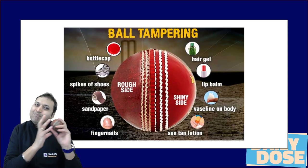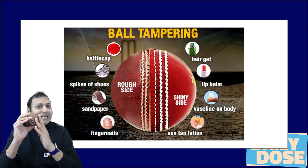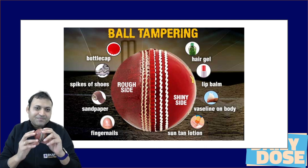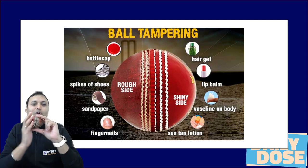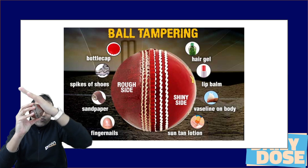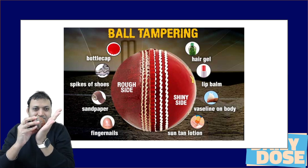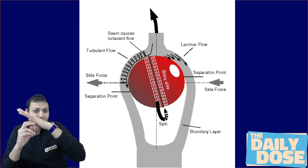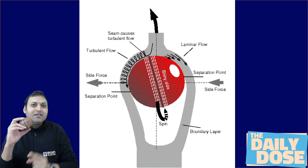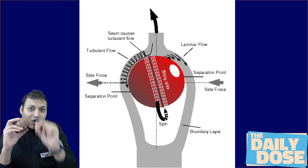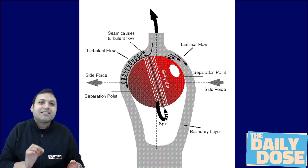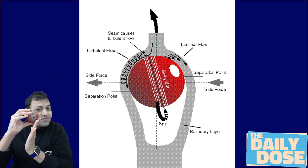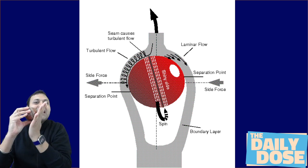The swing of a ball is basically related to the tampering of the ball. One side of the ball is intentionally made rough by unethical means, and the other side is made smooth or shiny. When there is a difference in roughness on both sides and the ball is thrown, air flows over the surface. On the rough surface, the boundary layer becomes turbulent, and in a turbulent boundary layer, the separation of the flow comes late because the turbulent velocity profile has less distortion compared to the laminar. The air remains attached for a longer duration.